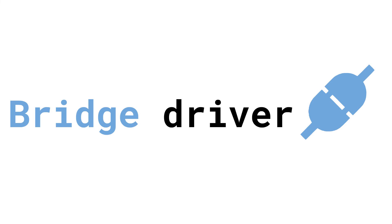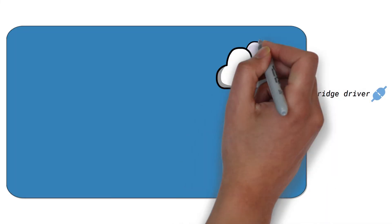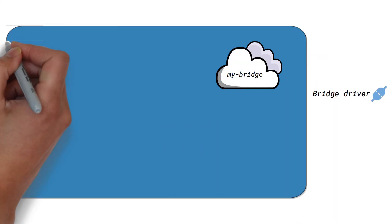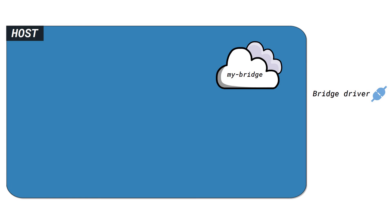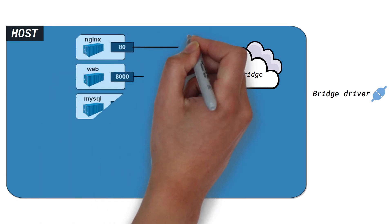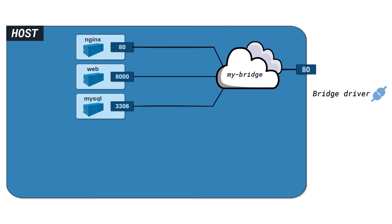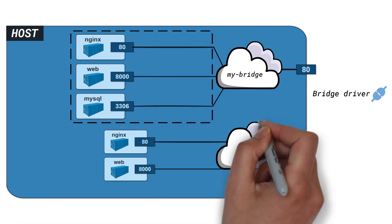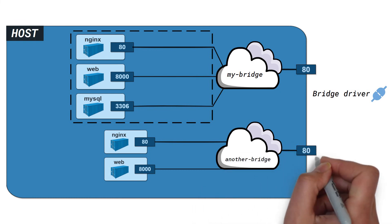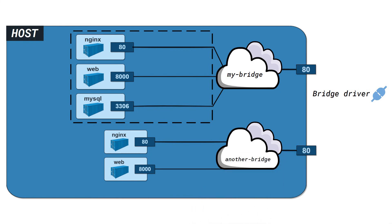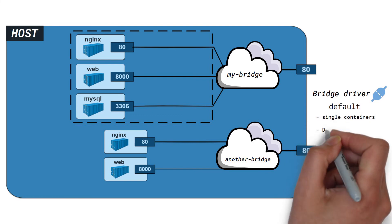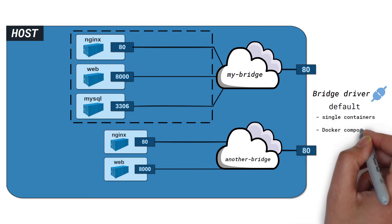The bridge driver creates an internal network within a single Docker host. Containers placed within this network can communicate with each other but are isolated from other containers not on this internal network. Bridge is the default driver when running single containers or when using Docker Compose.